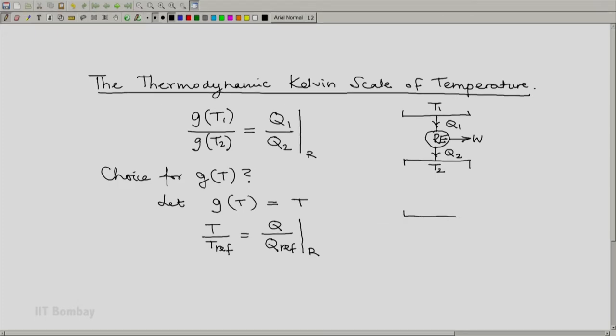For this definition, what we will have is a reference temperature and a reference system and also a value for that. A reversible engine working between our system at temperature T and the reference temperature system. This heat interaction is Q, this heat interaction is Q ref. Of course, there will be work interaction, but we are really interested in that this is only the measurement of the heat interactions.